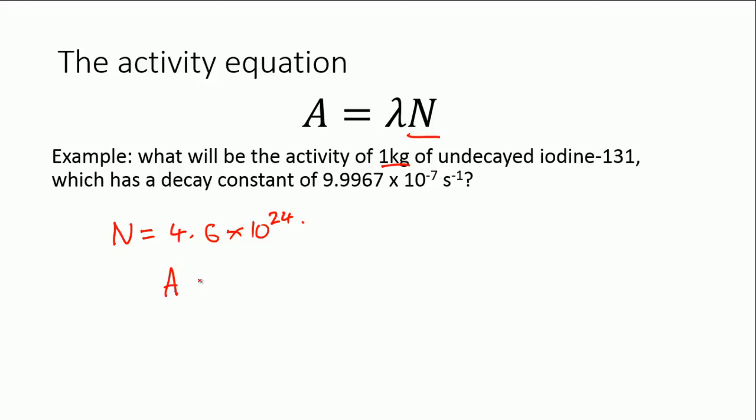To get the activity, we multiply that number by the decay constant. So, we have 9.9967 times 10 to the minus 7, which is the decay constant, lambda, and we multiply that by N, so times 4.6 times 10 to the 24. And when you calculate all that, you end up with an activity of approximately 4.60 times 10 to the 18 becquerels. That's the answer. It's literally multiplying this number by this number, but just bear in mind that actually you may have some work to do to get to the number of nuclei that you have to begin with.